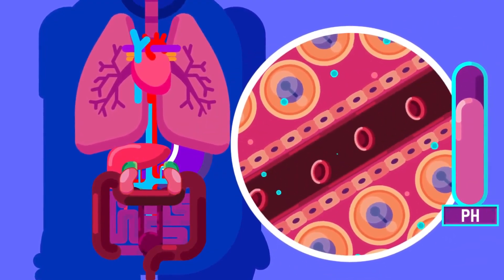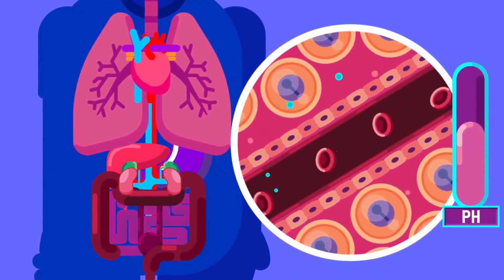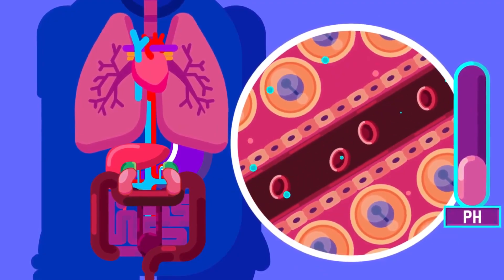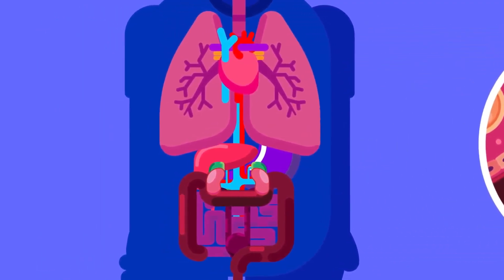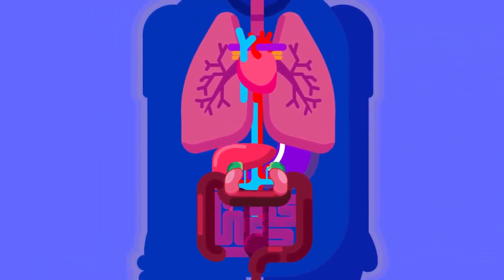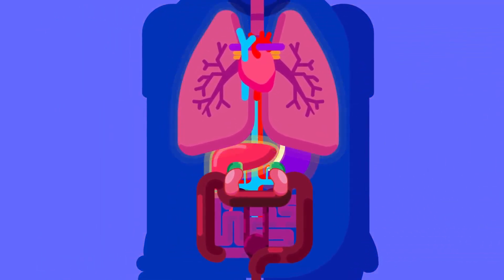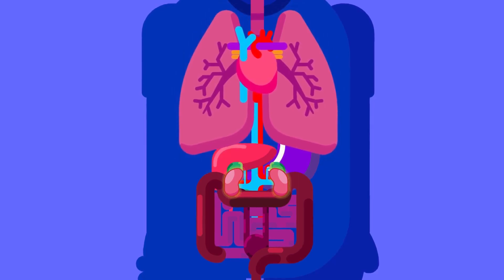The accumulation of wastes in the body interferes with the proper functioning of the cells. Excretory organs in humans are the skin, lungs, liver, and kidney.